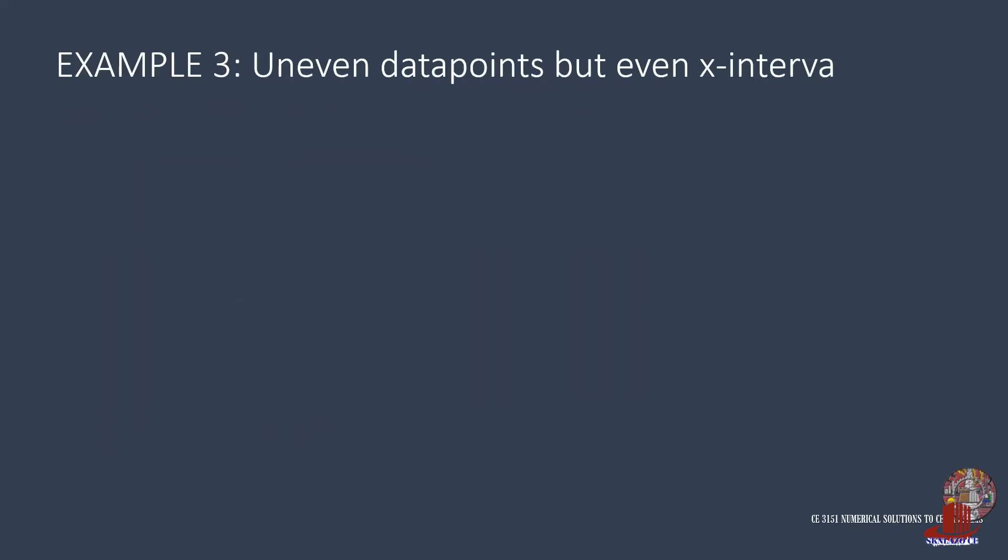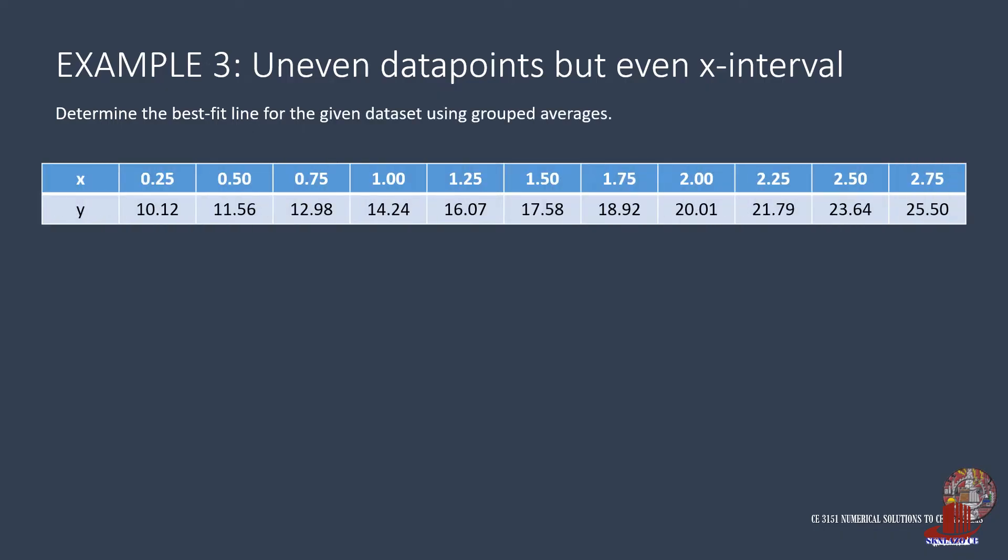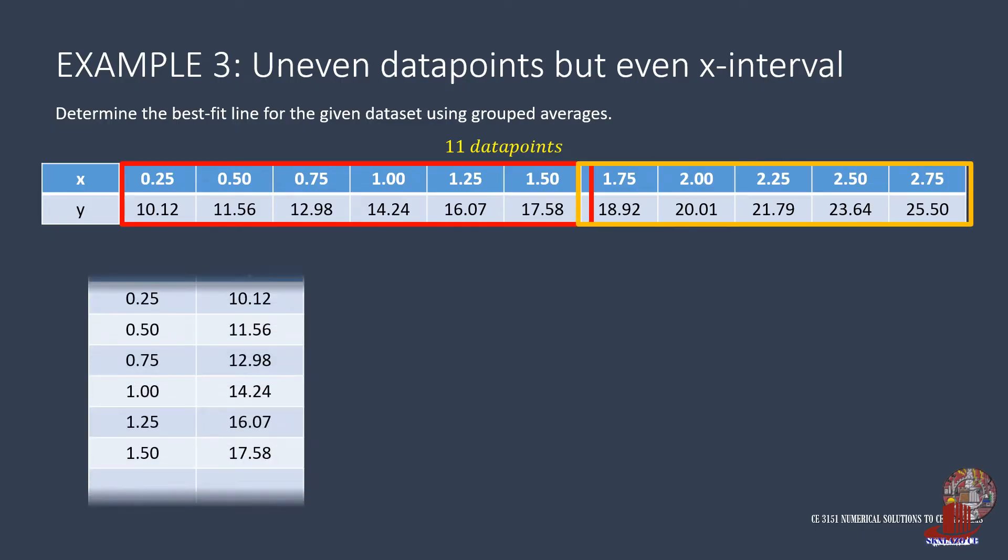The third example has odd numbered data points but even x intervals. In this case, there are 11 data points. The first group contains 6 from x equal to 0.25 until 1.5. Adding all x intervals within the range has a total of 5.25. The average is then 0.875.